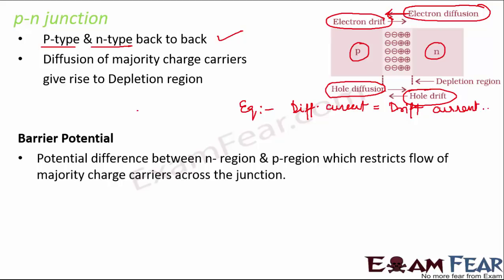The barrier potential is the potential difference between the N region and P region which restricts the flow of majority charge carriers across the junction. It is also called the barrier height. This potential difference prevents majority carriers from flowing indefinitely across the junction. Note that this portion of the video is only for recap — for detailed explanation please watch the detailed semiconductor electronics class 12 video on examfear.com.